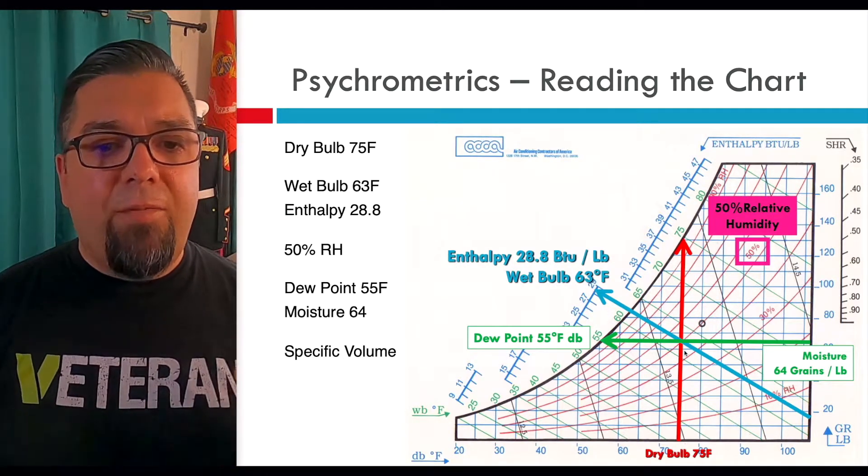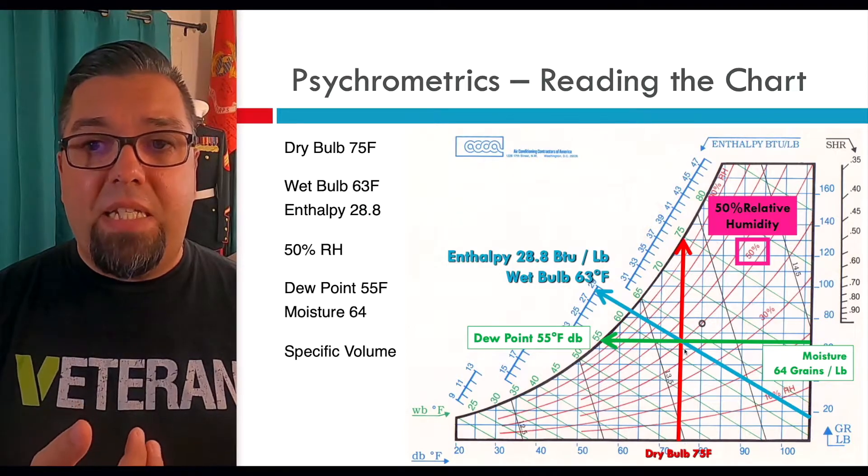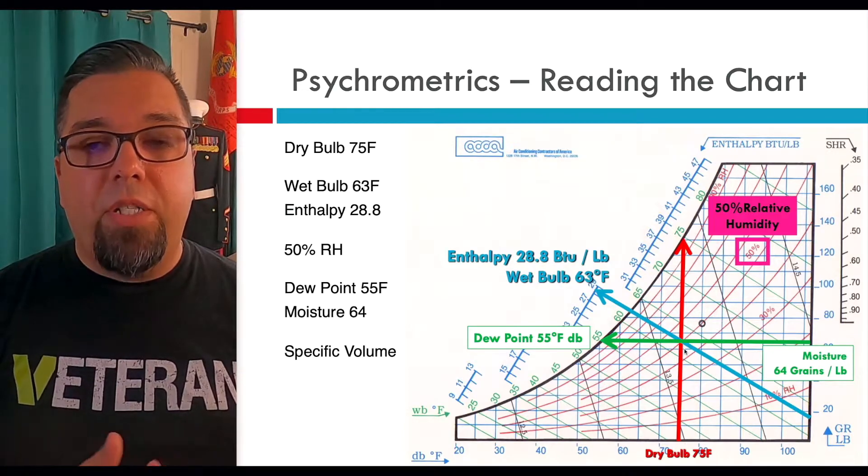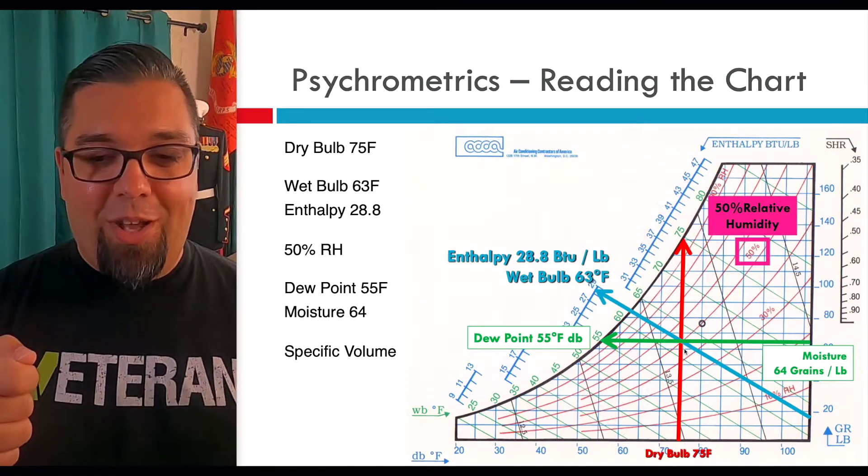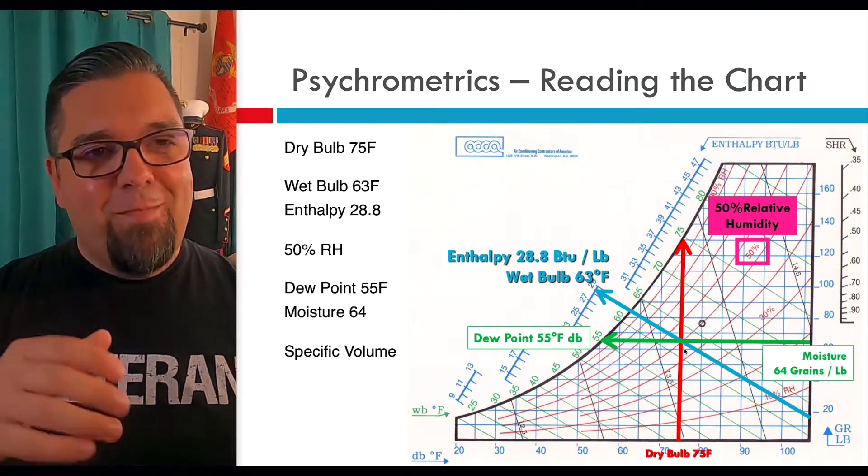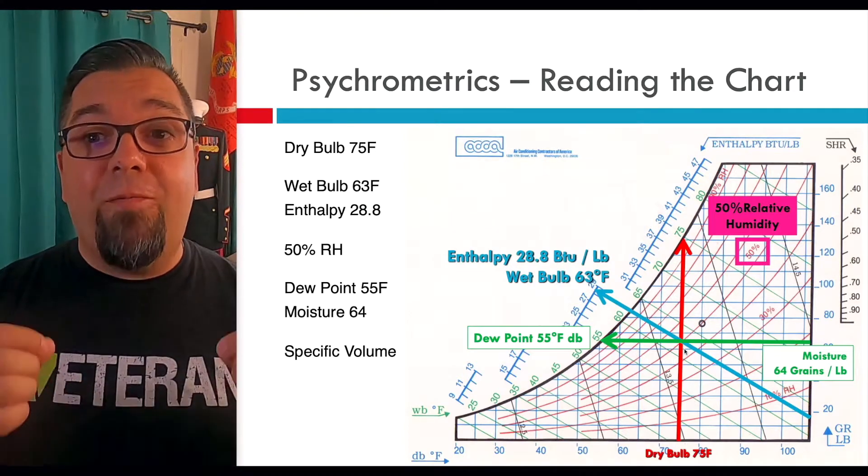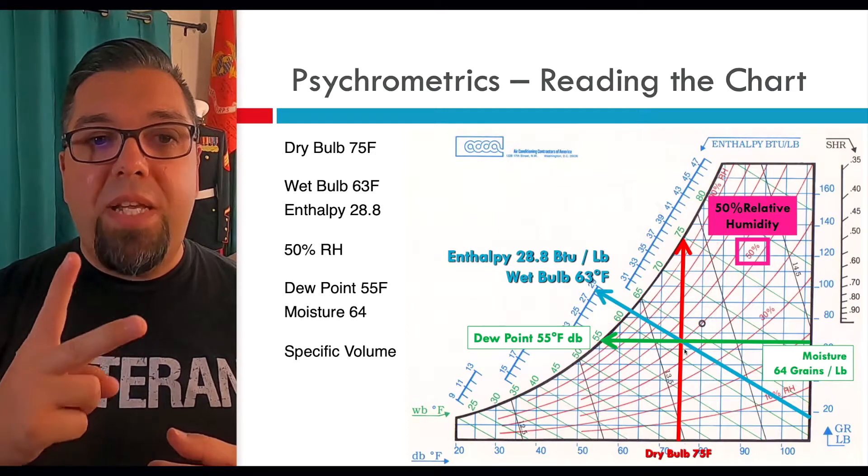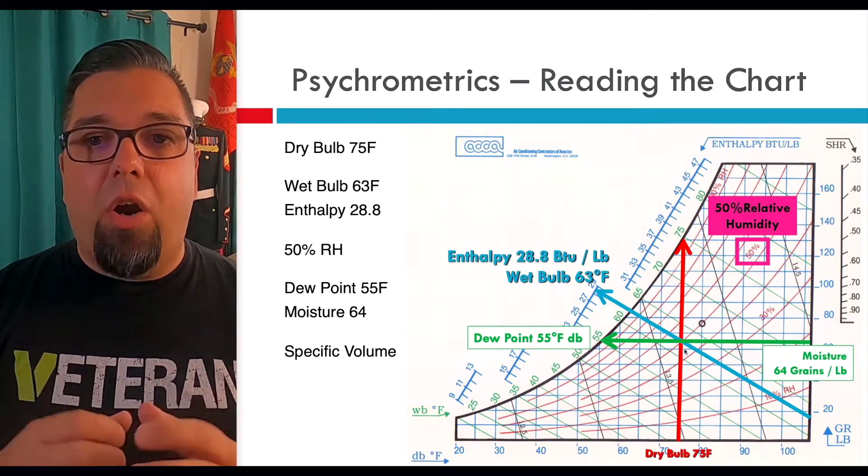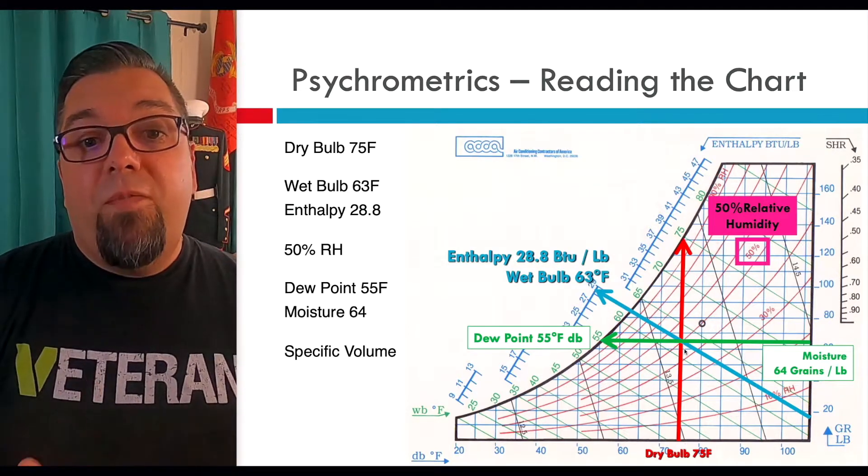Then if I know my wet bulb temperature, and if you guys are in service you probably know dry bulb and wet bulb are probably the two easiest pieces to get off of anything with properties of air. You can measure that very easily these days with digital psychrometers. I personally used to use the old cotton sock, wet it with a type K thermocouple, put it in the return and watch that water evaporate. It was a nightmare. By the time it actually evaporated to get me a wet bulb the dry bulb temperature already changed. So now we have fast accurate tools.